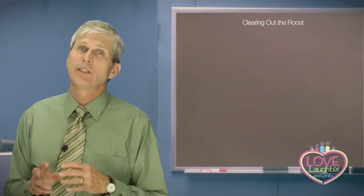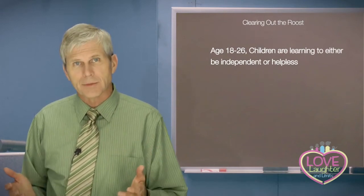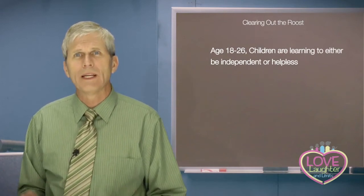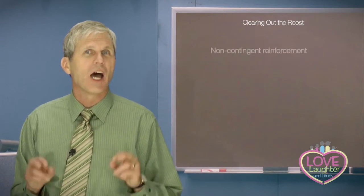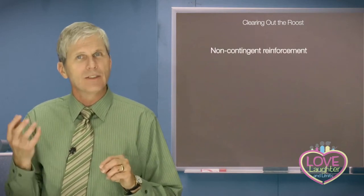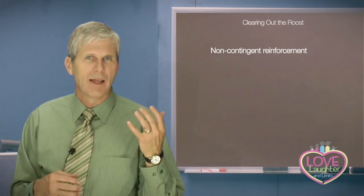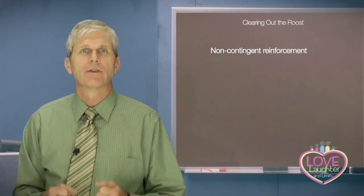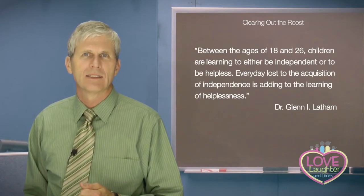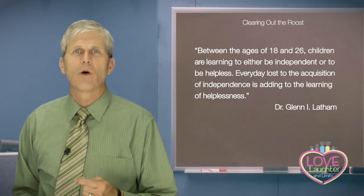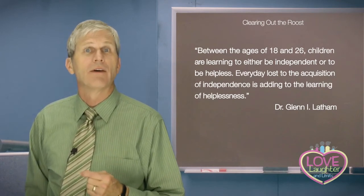The problem here is that during this period from 18 to 26, children are learning either to be independent or helpless. The child that learns no matter what he does, that the things that he wants and needs are going to keep coming, becomes satisfied to be helpless. The problem is called non-contingent reinforcement, meaning the goodies, the reinforcing payoffs, the reinforcers, keep coming regardless of what the child does. There's no connection between effort and behavior and the payoff. Dr. Latham wrote that between the ages of 18 and 26, children are learning to either be independent or to be helpless. Every day lost to the acquisition of independence is adding to the learning of helplessness.